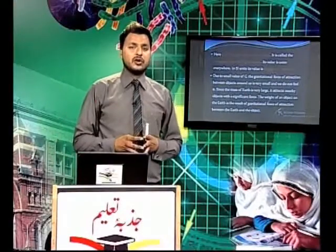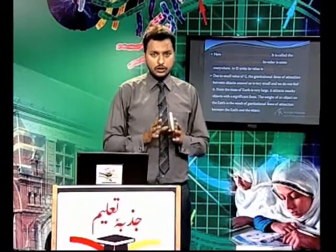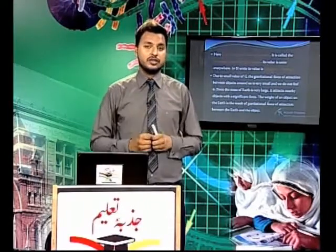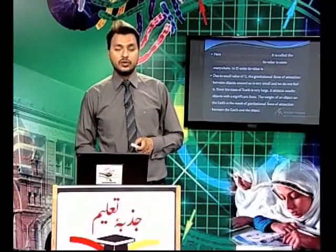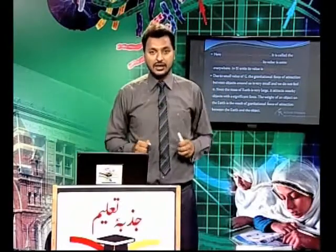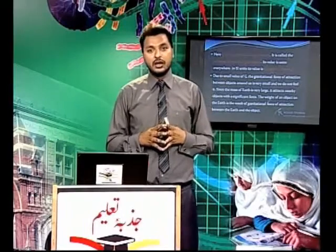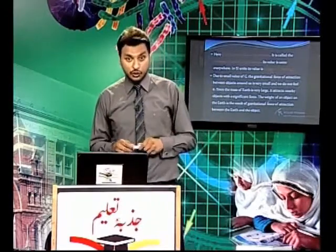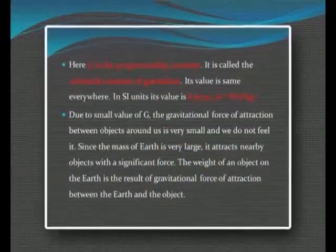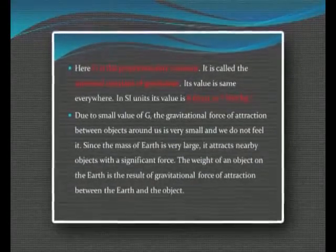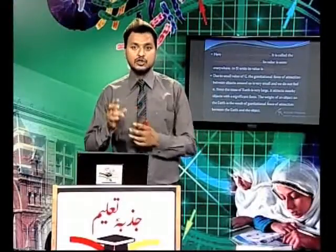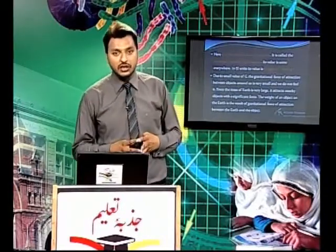सवाल यह पैदा होता है कि कमरे में या कहीं भी हम मौजूद हों, दो masses या दो से ज्यादा masses के दर्मियान एक force of attraction होती है. वो force of attraction हमें महसूस क्यों नहीं होती? Table, chairs — यह सब एक दूसरे पर forces लगा रहे हैं, मगर यह forces हमें महसूस क्यों नहीं होती? Because G's value is very small — 10 to the power of minus 11 — and our masses are very small, which is why we cannot feel this force.